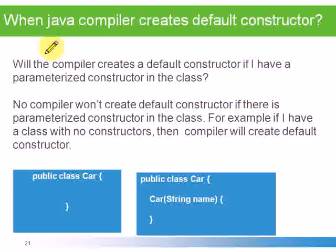When Java compiler creates a default constructor means if our class doesn't have any constructor, then JVM will create a default constructor for our class. For example, if we have a parameterized constructor, then Java compiler won't create any default constructor for our class.